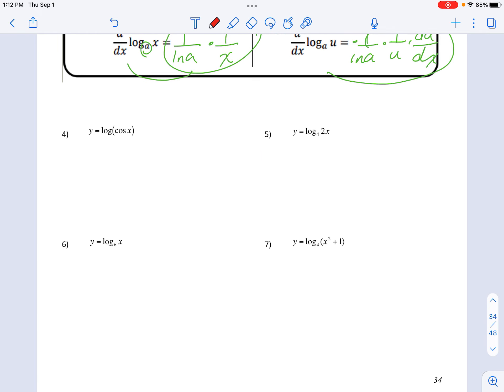I'm going to go ahead and do the change of base formula for all these. So this is natural log of cosine of x over natural log of 10. Remember when there's no base written, it's called a common log, so the base is 10. So derivative. Pull out the natural log of 10. Derivative of this is 1 over cosine. Chain rule, negative sine of x.